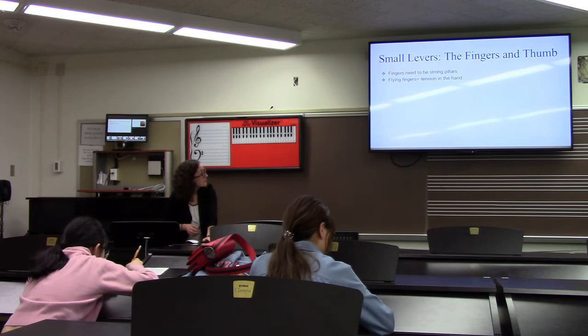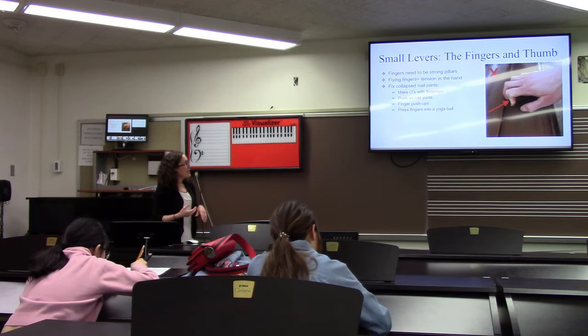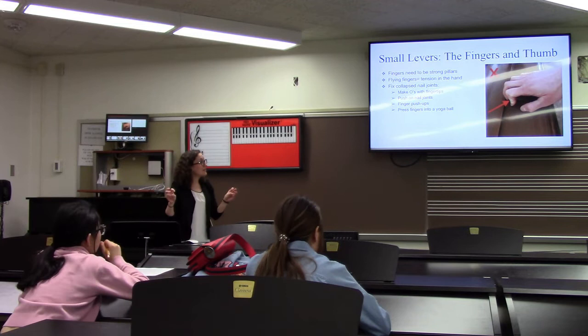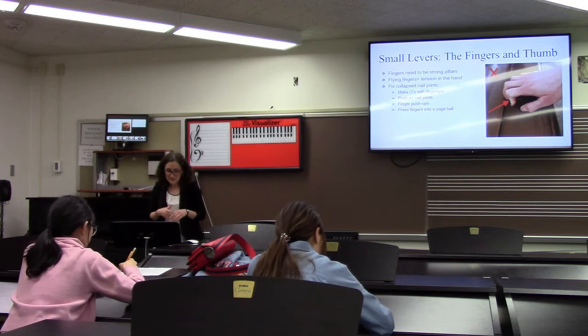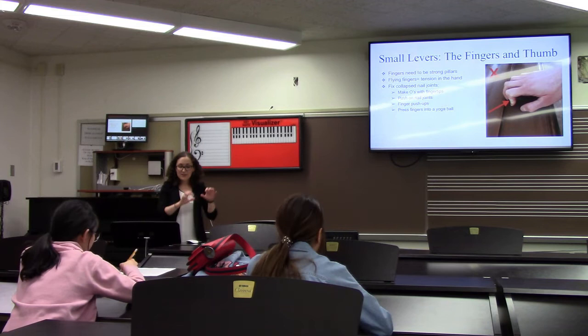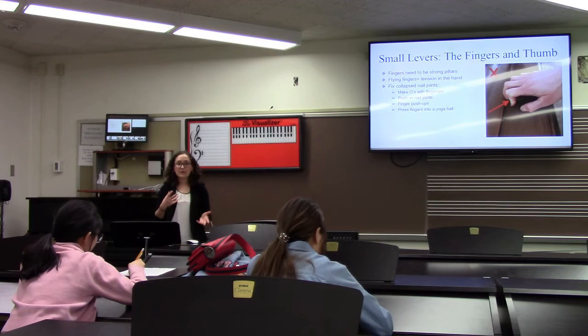Here is a picture of collapsed knuckles at the small joints. To fix or identify collapsed nail joints, ask students to make O's with their fingertips — then push on their nail joints and see if they collapse. This exercise is really good for developing strong fingernail joints. Julia Nurse also likes to tell students to imagine they're hanging off a cliff with their fingertips. You can also do finger push-ups and practice pushing fingers into a yoga ball so they know how to play with the fingertips and support their arm weight.